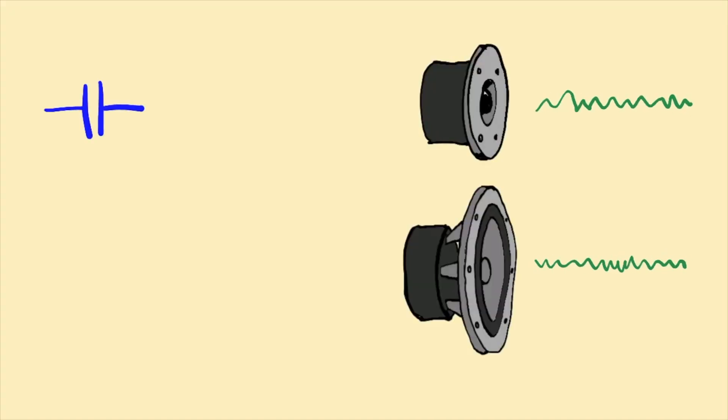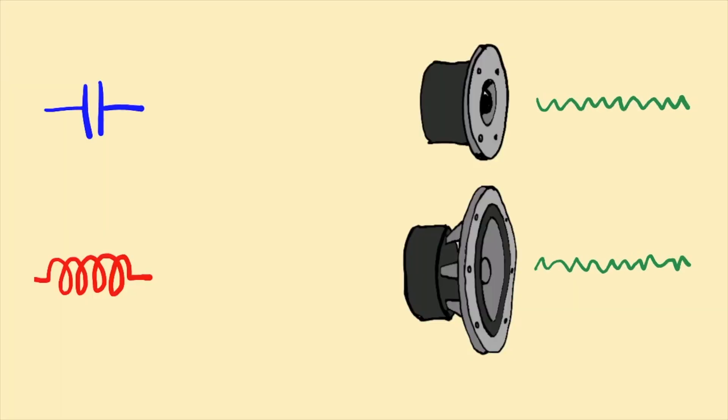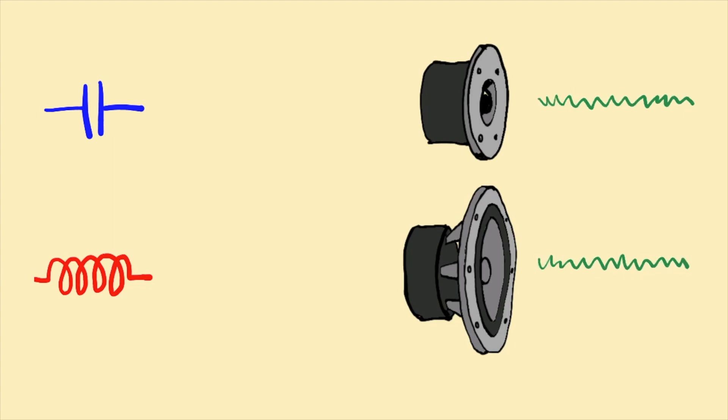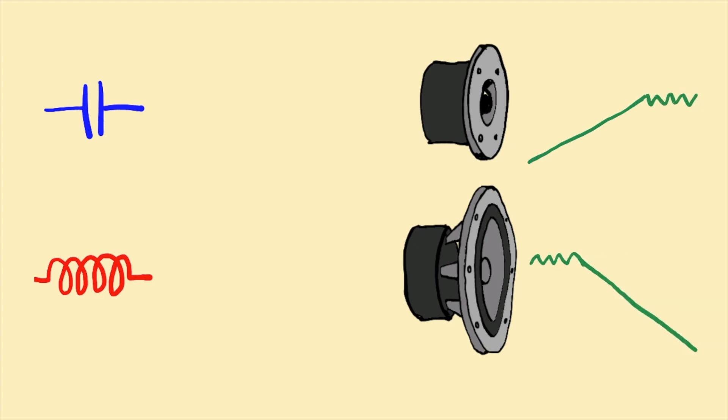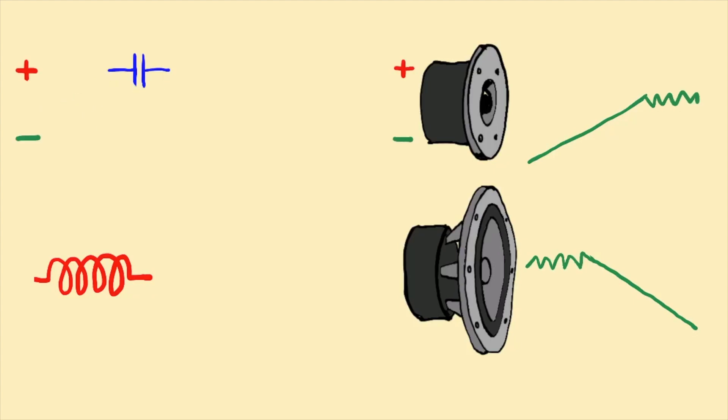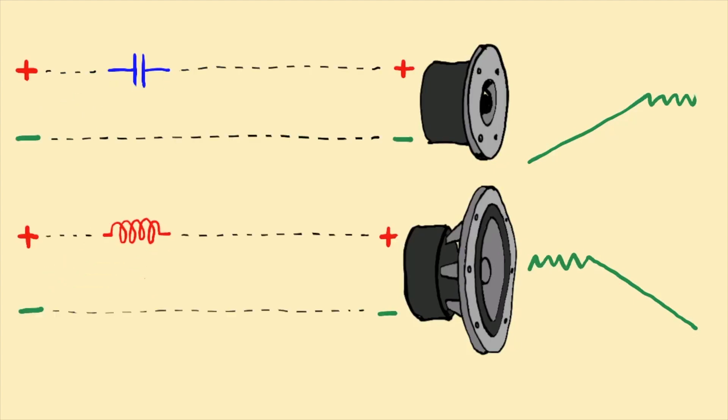A crossover network essentially prevents that from happening. It will dictate the frequency at which the high frequencies go to the tweeter and the low frequencies go to the woofer. We're going to be talking about what's called a passive crossover, which is the type found in the vast majority of speakers — passive components built into a circuit that is generally housed within the speaker itself. That basic job is done with capacitors and inductors. The capacitor is employed to create a high-pass filter, which passes high-frequency information but starts to filter out low-frequency information. A low-pass filter would use an inductor. In the simplest possible passive two-way, you would have a capacitor between the amplifier and the tweeter and an inductor between the amplifier and the woofer.